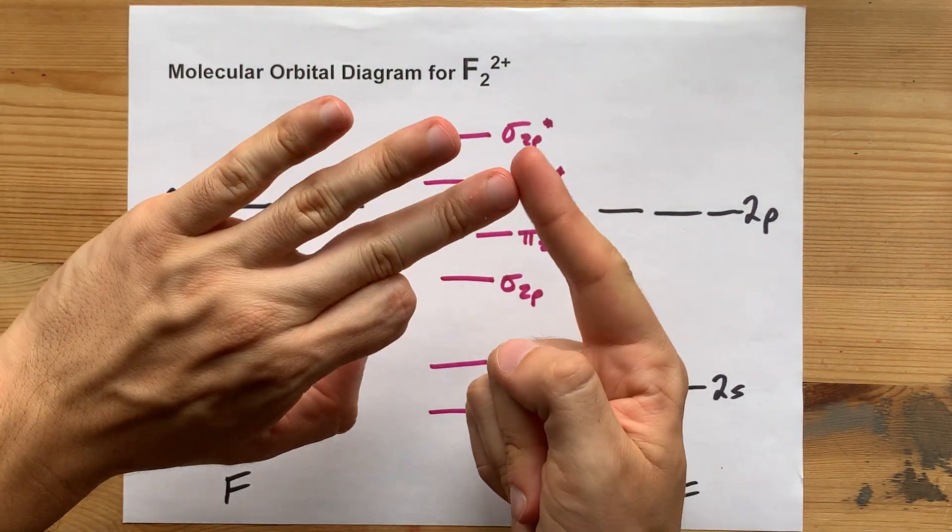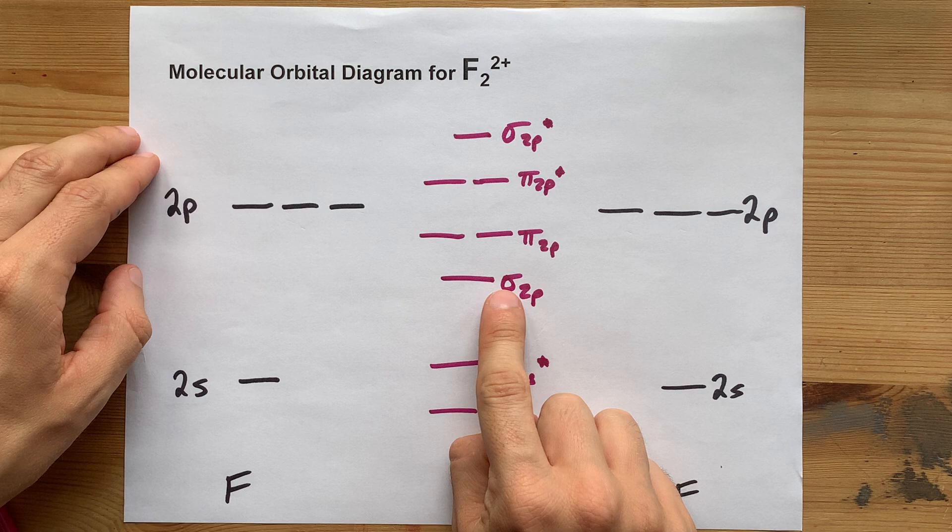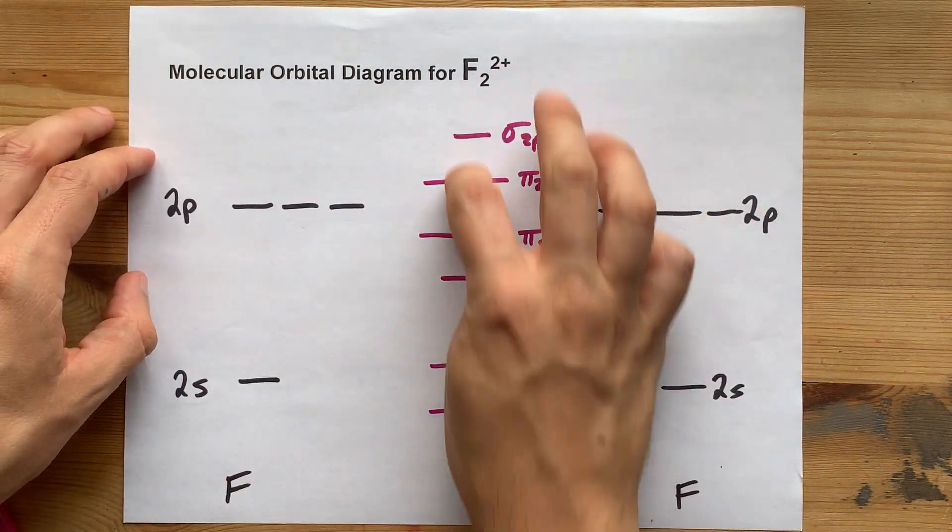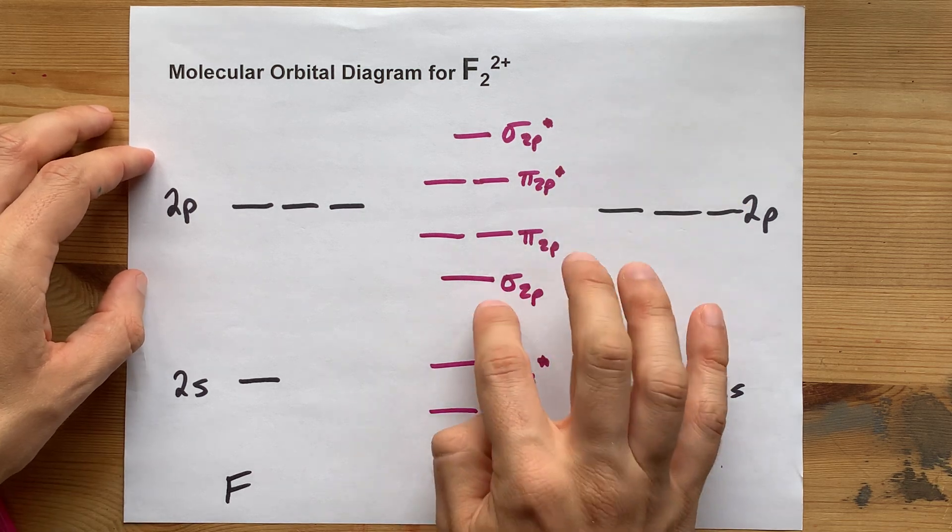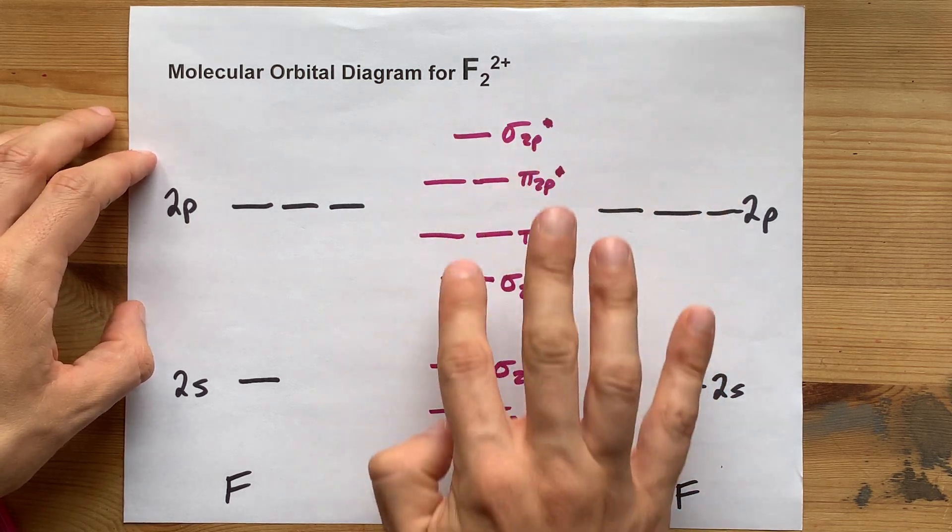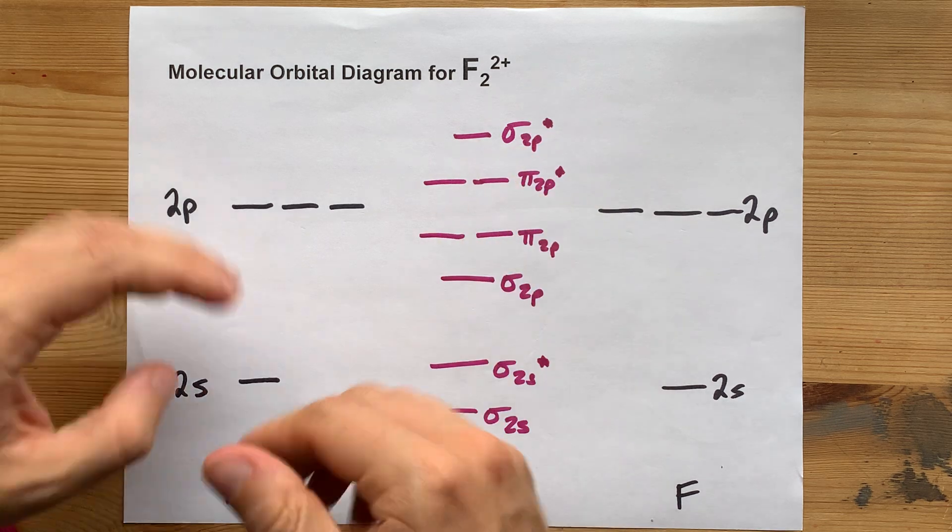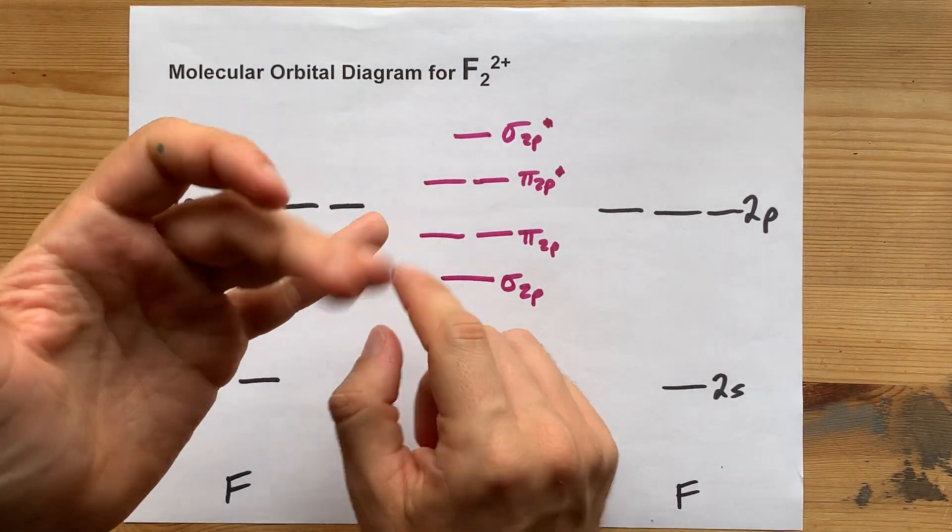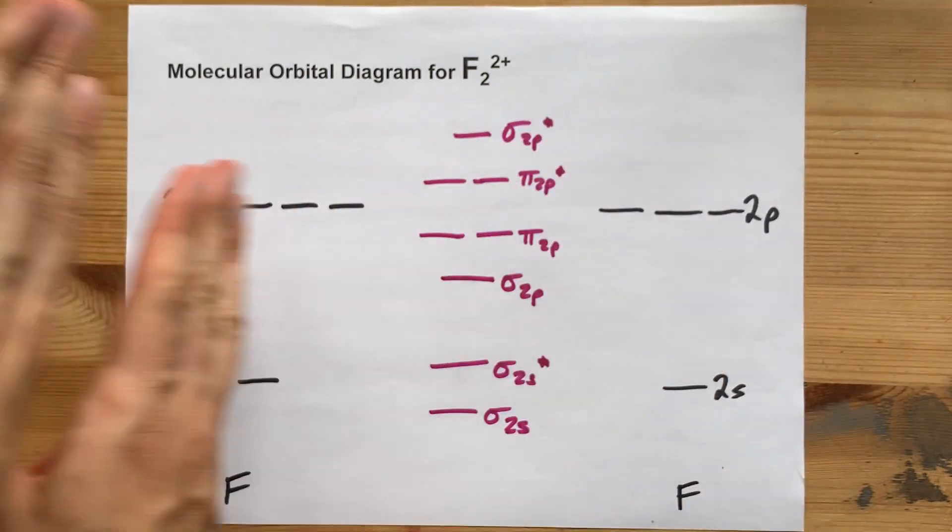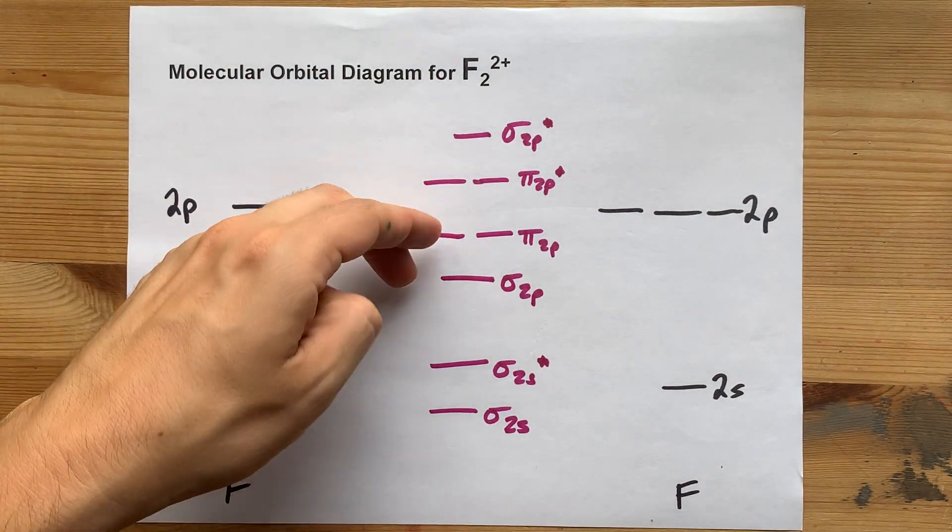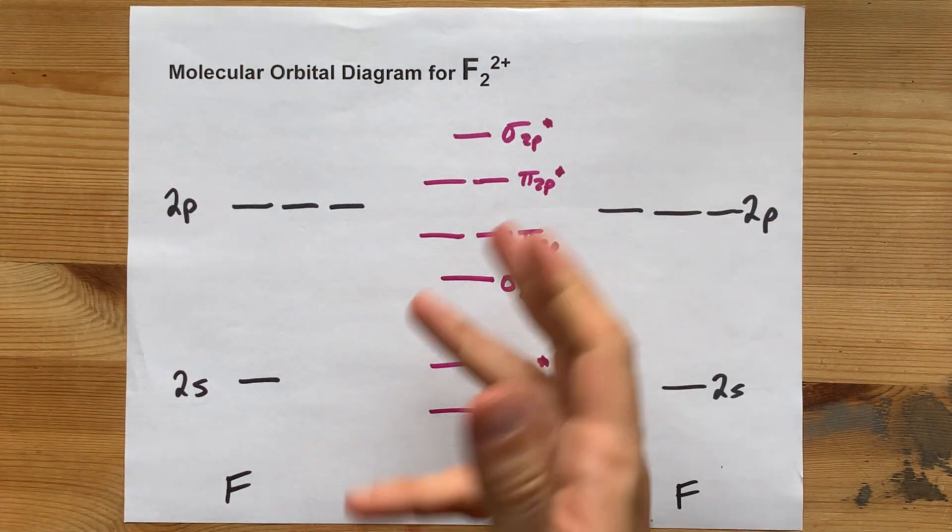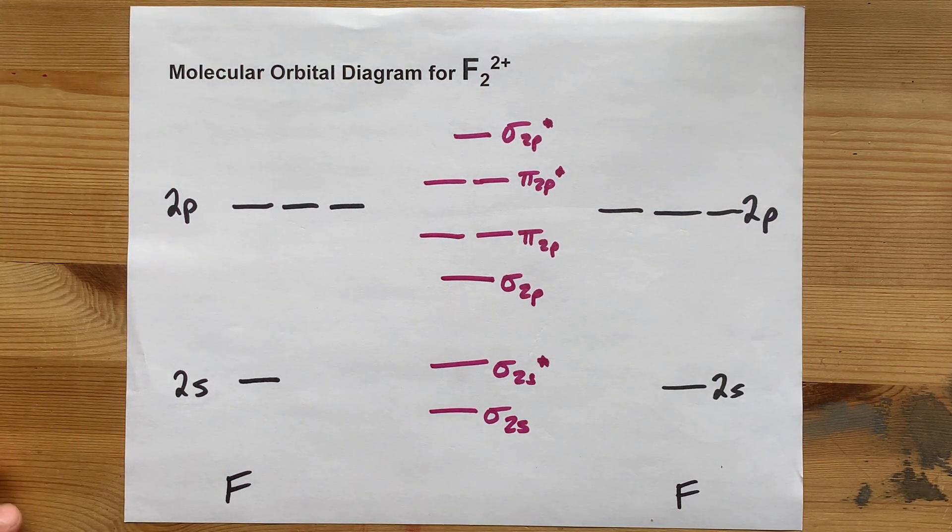Oxygen, fluorine, and neon all have sigma 2p as their lowest energy molecular orbital in this zone. Well, these are obviously lower, but this is the order of energies in the molecular orbitals for oxygen, fluorine, and neon. For boron, carbon, nitrogen—anything before oxygen—these two are switched. There's a crossover there because of the effective nuclear charge and the pulls that the orbitals are feeling.